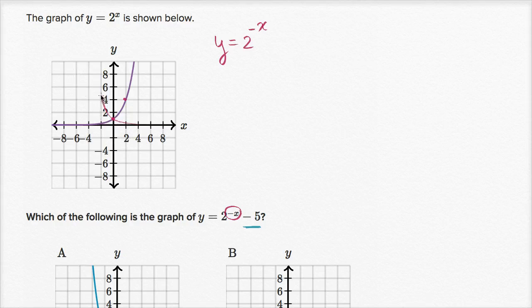And so our graph is going to look something like this. They're going to be mirror images flipped around the y-axis. That is the graph of y equals two to the negative x.